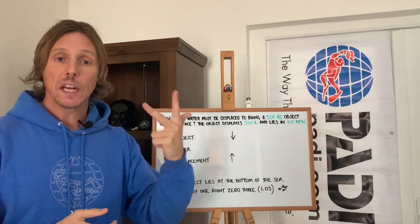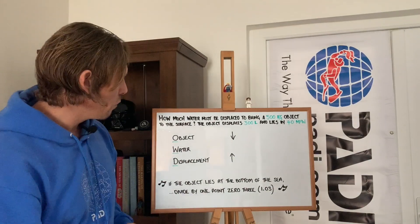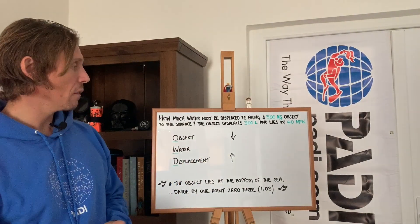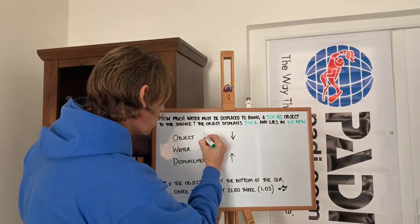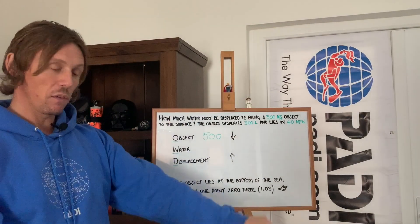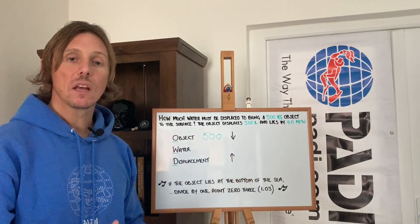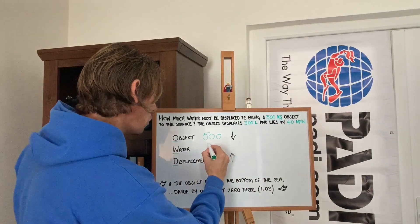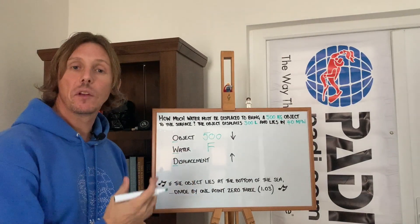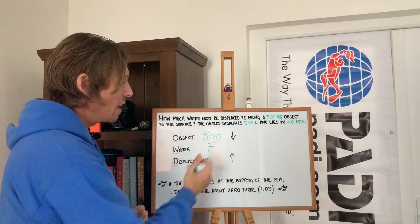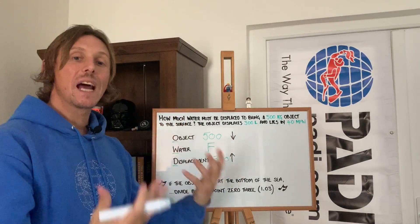Nothing changes — we still need to know that we have the three things, then we sing the riddle, and that's how we get the answer. Do we have the weight of the object? Yes — 500 kilos of downward force. Do we have the water it sits in? Yes — metres of fresh water. And displacement? Yes — 300 litres of upward force. We now need to find the difference.